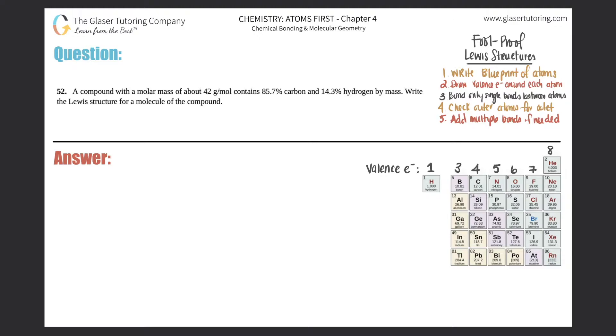Number 52. A compound with a molar mass of about 42 grams per mole contains 85.7% carbon and 14.3% hydrogen by mass. Write the Lewis structure for a molecule of the compound.